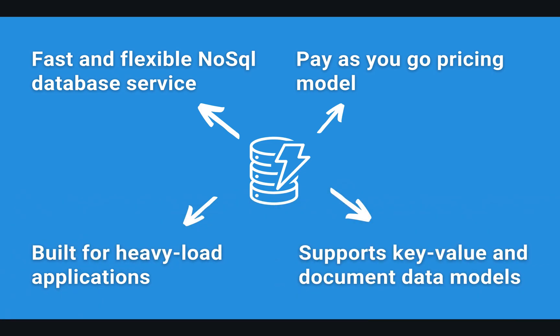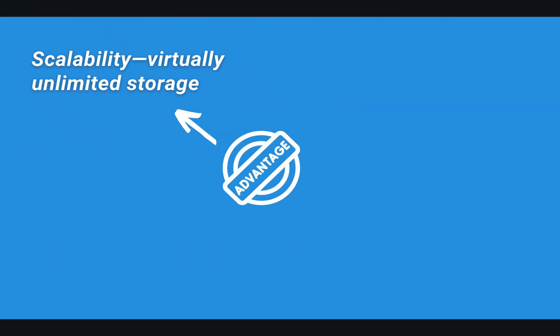DynamoDB supports both key-value and document data models. The model is really flexible — you only have to define the hash key, which is equivalent to the primary key in relational databases. DynamoDB is a great choice for applications with really high volumes of data; it scales infinitely. You don't have to think about partitions or nodes — you just save the data. DynamoDB always stores data on SSD hard drives.